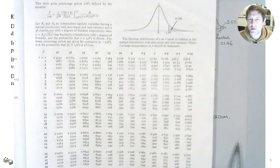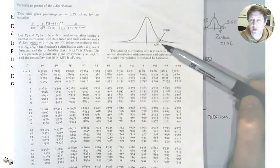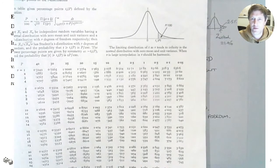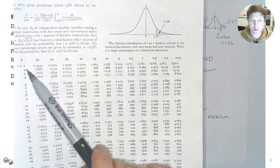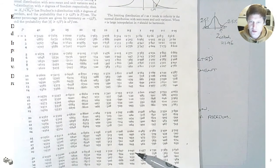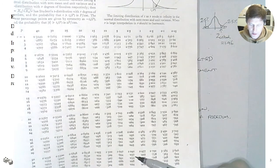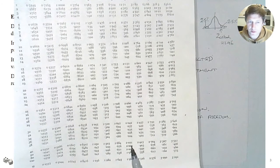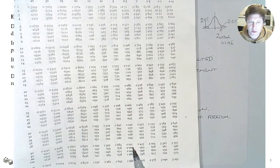The t-distribution is symmetrical. If we have n samples, we have n minus 1 degrees of freedom. Looking at the t-distribution tables: we need 2.5% in each tail for the 5% significance level. For our example with 40 samples — that's 39 degrees of freedom — the critical value falls between 2.024 and 2.021 in the tables, which is what we'd extract.